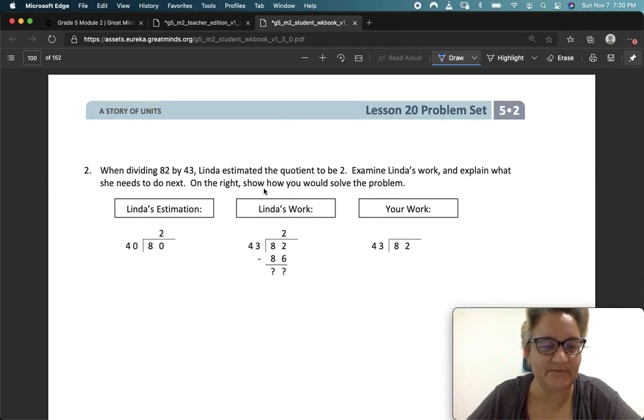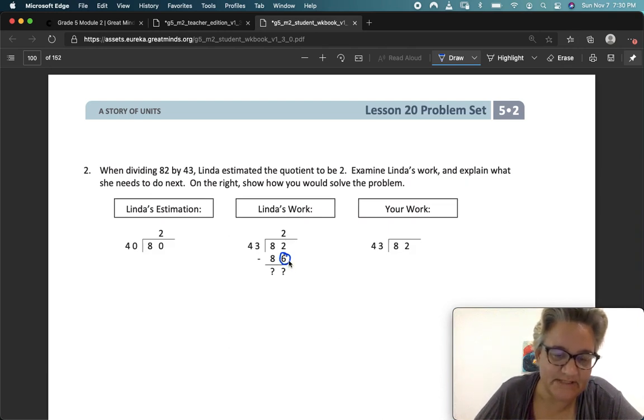Number 2. When dividing 82 by 43, Linda estimated the quotient to be 2. Well, maybe, but I don't think it's going to work. Examine Linda's work and explain what she needs to do next. On the right, show how you would solve the problem. So Linda, she sees that this number, she has too many. She can't subtract. So that's not going to work. We need to multiply by 1 instead.